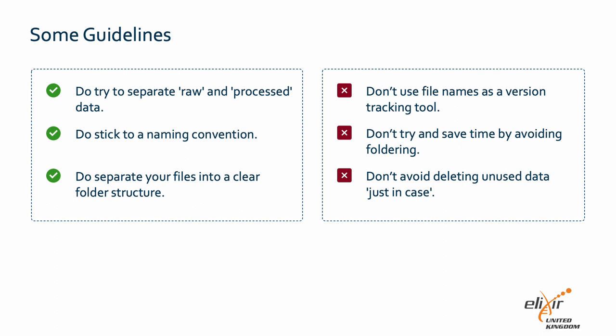Within each of these folders you should establish a strict naming convention — no more 'analysis script final v2'. If files need a version, use version control. If files need names that indicate the order they should be run in, use a leading number such as 01. You can find more information about naming files in our RDM byte on this subject.